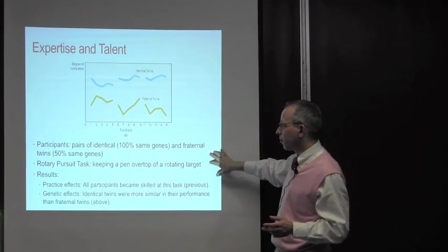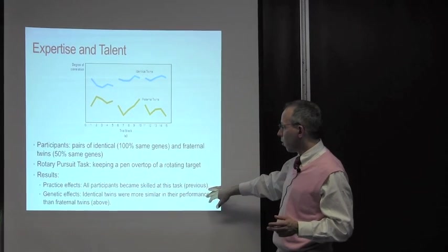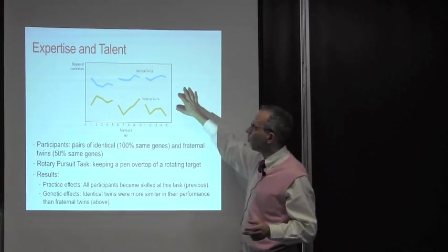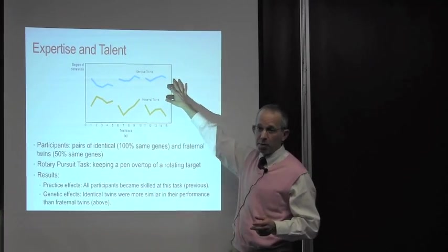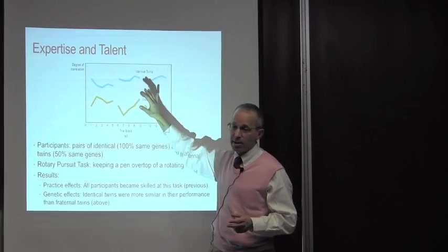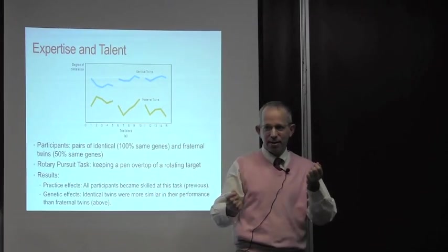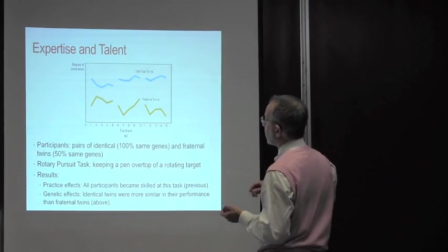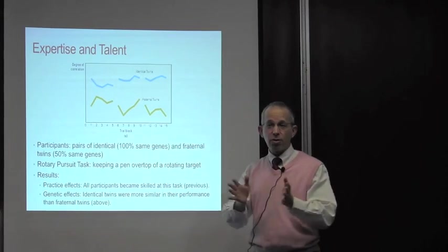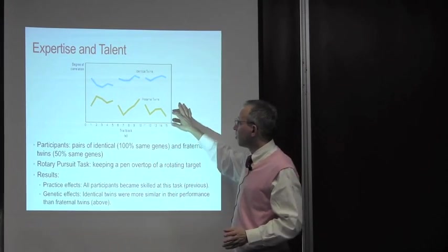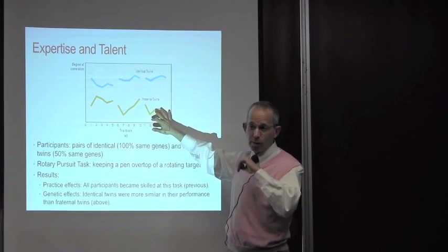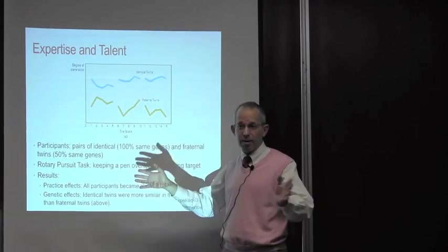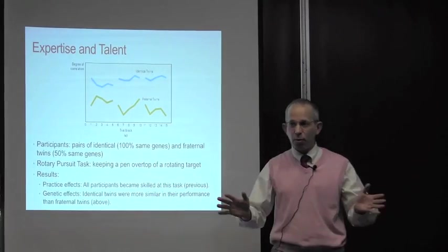All participants become skilled. The identical twins were more similar in their performance than fraternal twins. But the fraternal twins, the more they practiced, the more you saw this divergence. Because they began with less genetic overlap, the more they practiced and the more there were individual differences in practice, the more they would diverge.